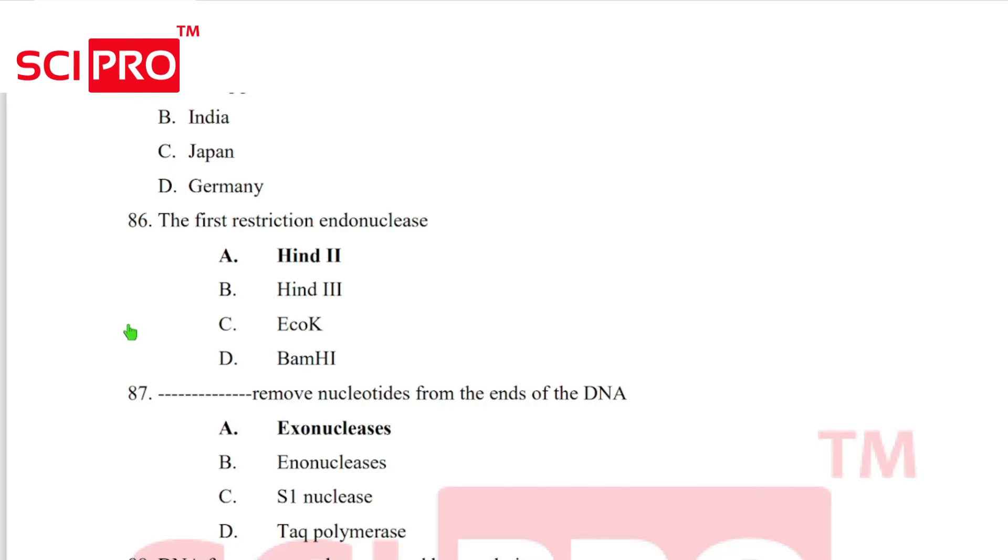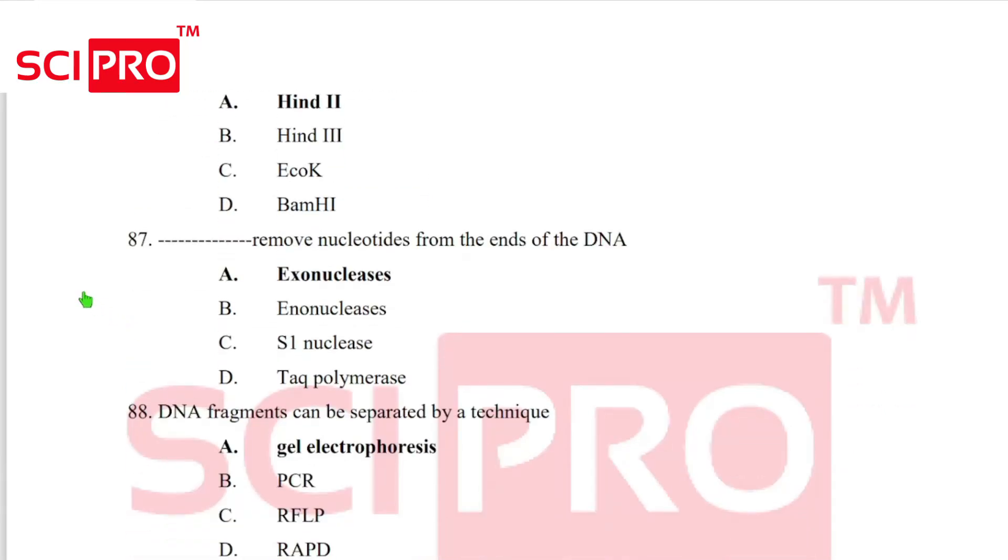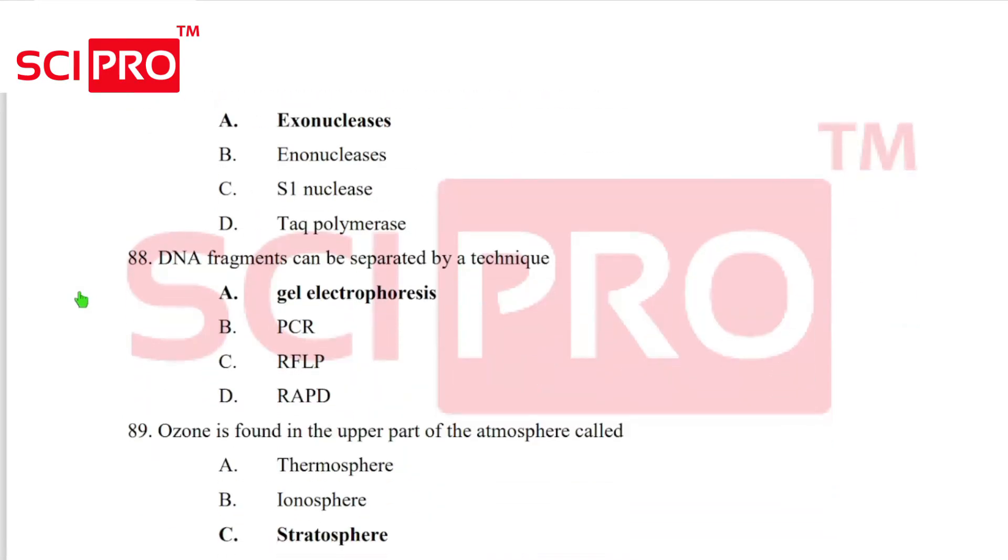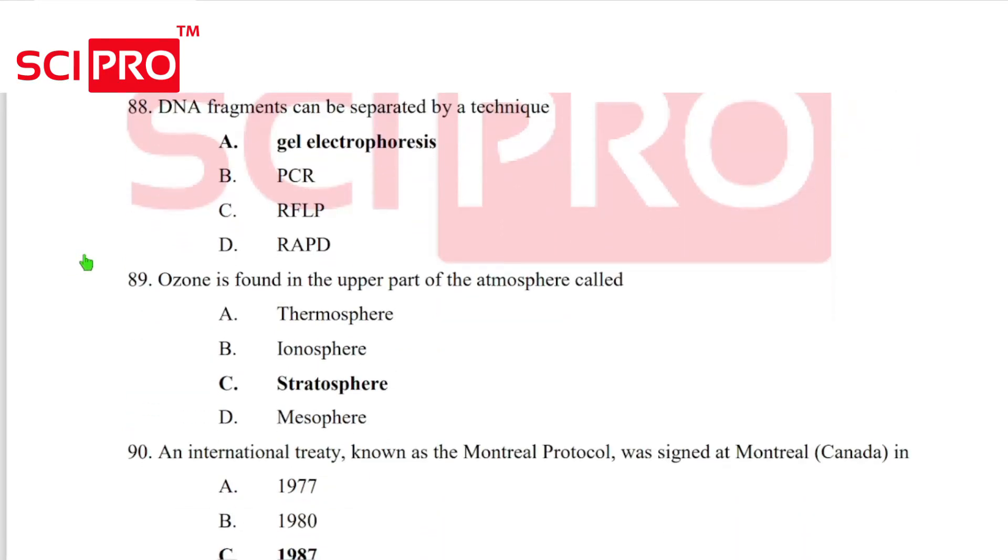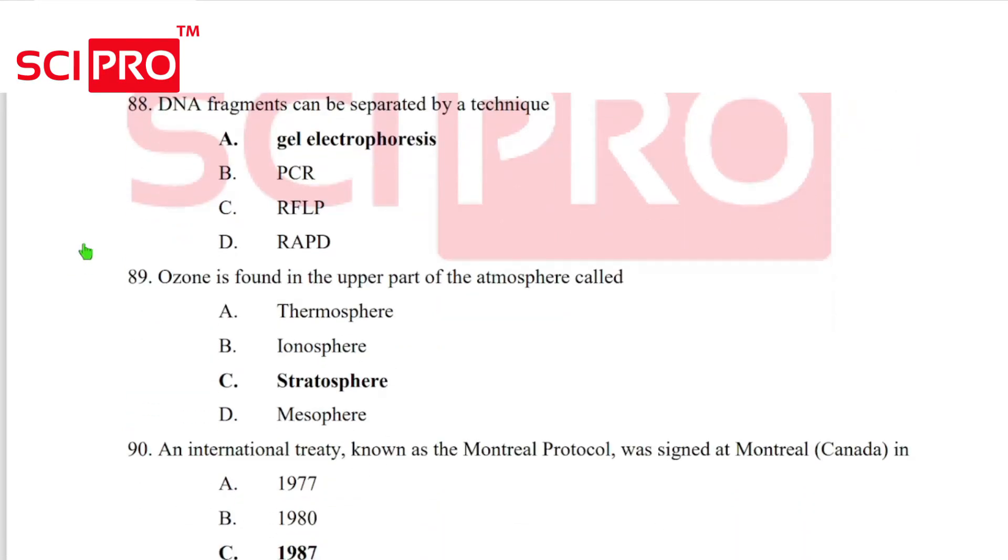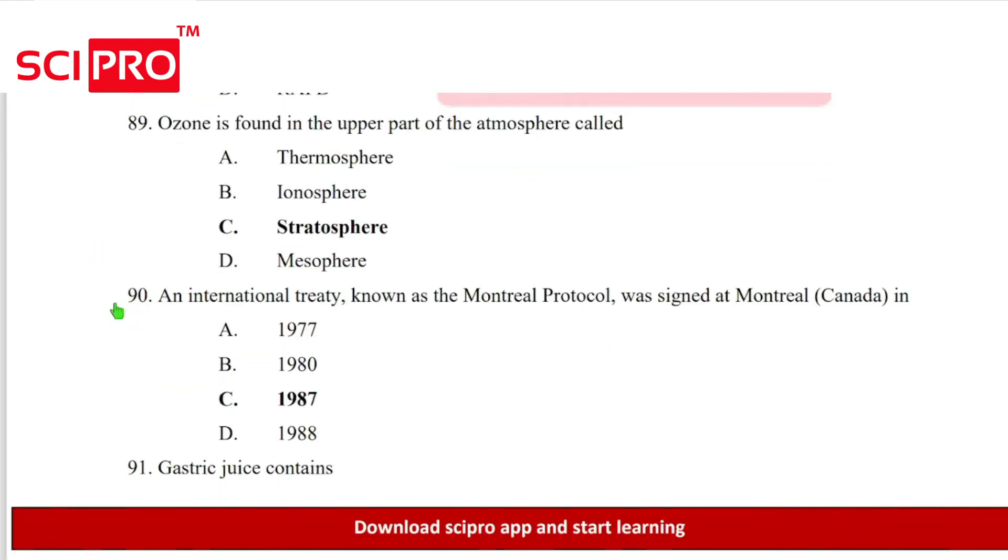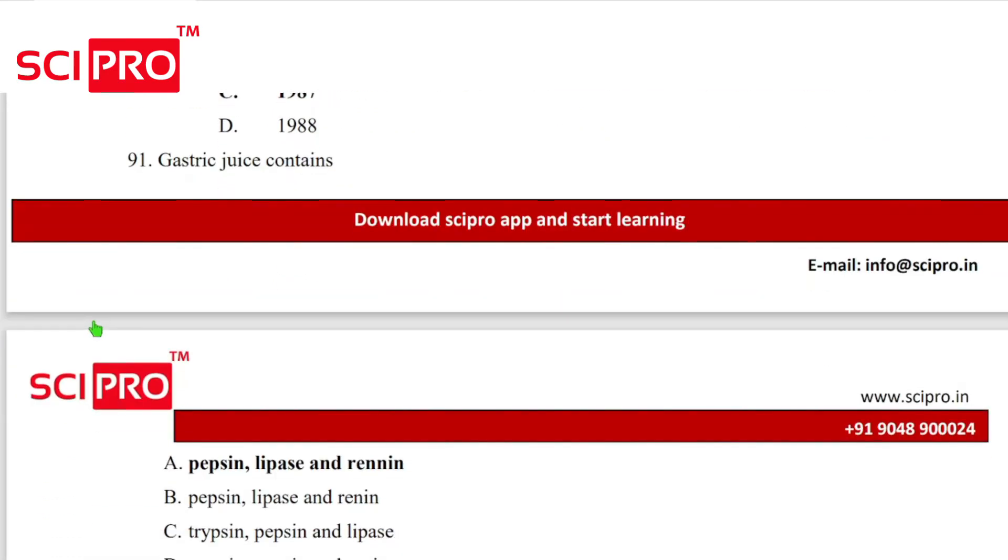Question number 86, the first restriction endonuclease, Hind II. Question 87, exonuclease removes nucleotides from the ends of DNA. Question number 88, the DNA fragment can be separated by the technique electrophoresis. Question number 89, ozone is found in the upper part of atmosphere called stratosphere. Question number 90, the International Treaty known as Montreal Protocol was signed at Montreal in 1987.